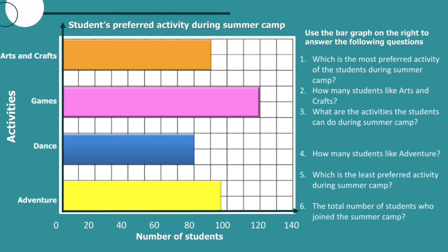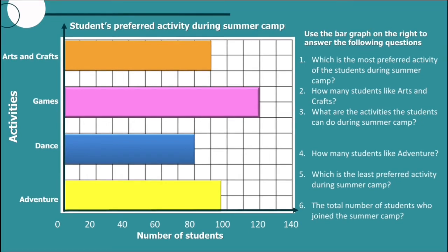Which is the most preferred activity of the students during summer camp? As we can see on the graph, the pink bar is the tallest, which is games. Number two: how many students like arts and crafts? The bar for arts and crafts stops between 80 and 100, so we can conclude that to get the frequency, we need to find the midpoint of those two, which is 90.